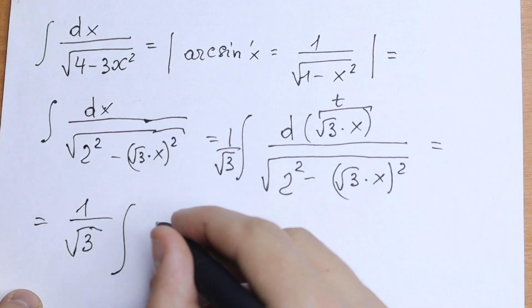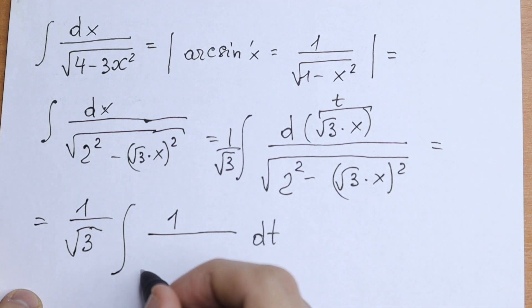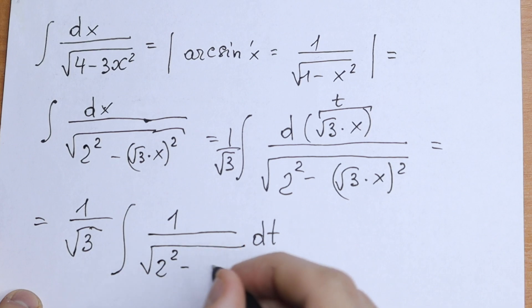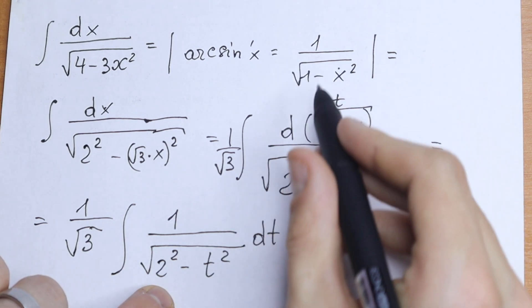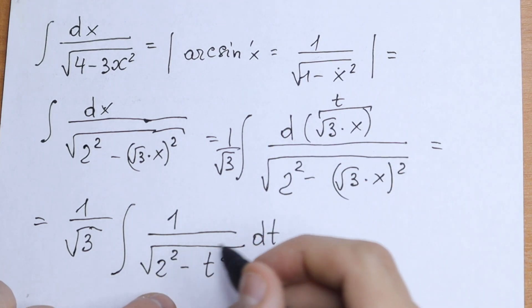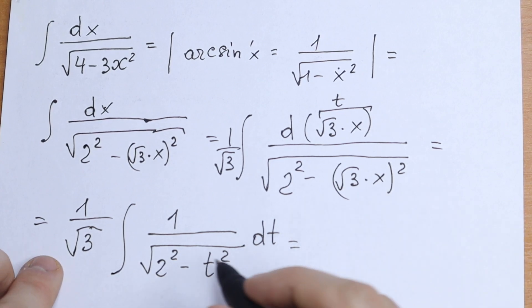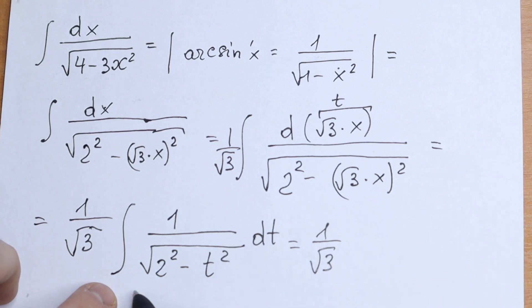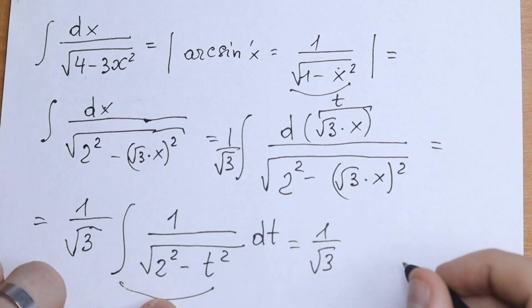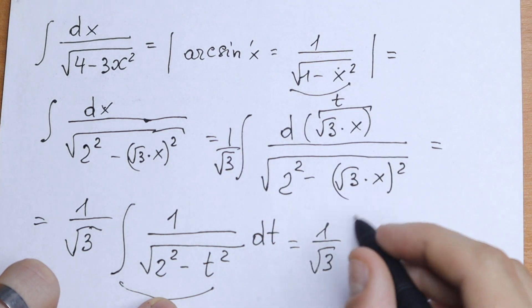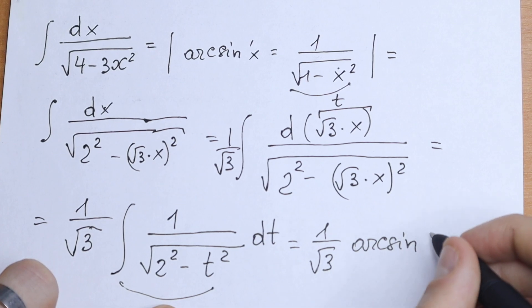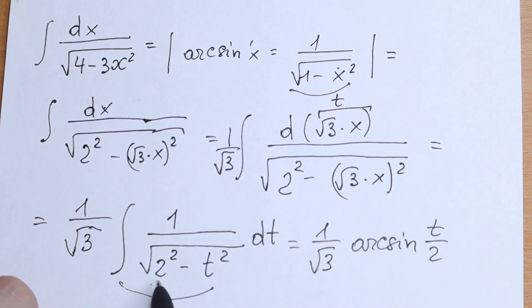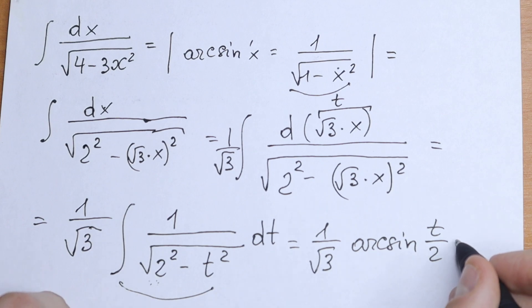As a result, we'll have 1 over square root of 3 times the integral of dt over the square root of 2 squared minus t squared. This is the arcsine formula — but instead of the standard form with 1, we have 2 squared. So we apply the formula: 1 over square root of 3 times arcsin(t over 2), plus C.